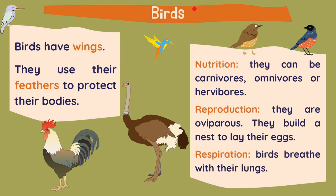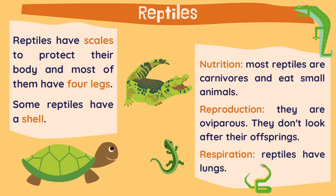Now let's have a look at birds. Obviously, birds have wings and they use their feathers to protect their bodies. In terms of nutrition, they can be carnivores, omnivores or herbivores. They reproduce by laying eggs, so they are oviparous. They build a nest to lay their eggs. And birds, the same as mammals, breathe with their lungs.